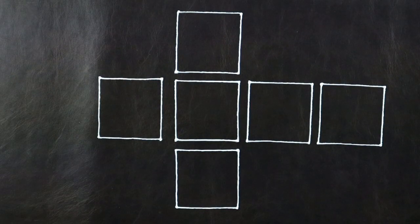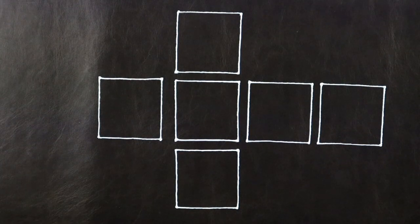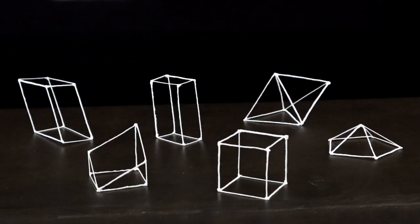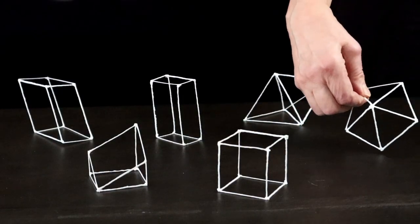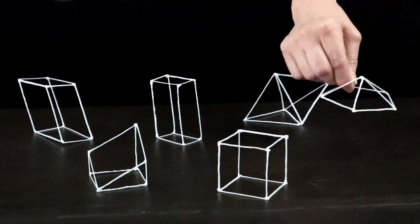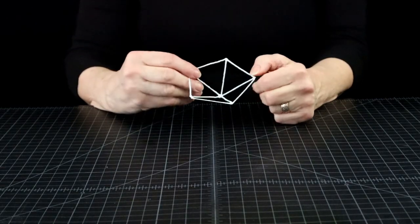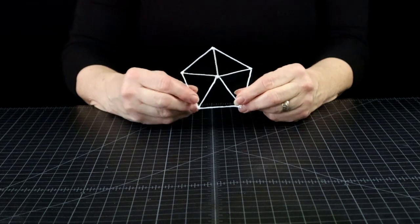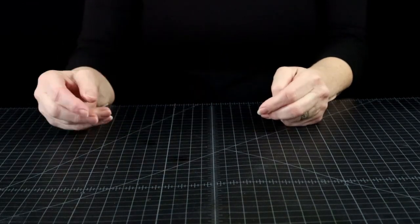Well, first of all, the faces have to be all the same shape and size. Let's look at our applicants. First up: pentagonal pyramid — five triangles and one pentagon. That won't work.